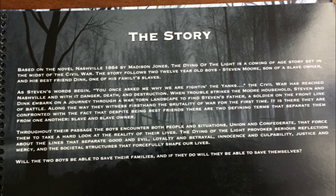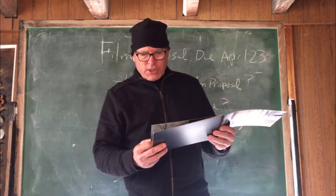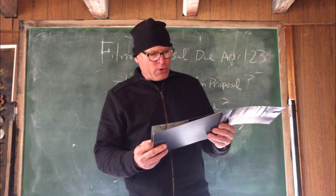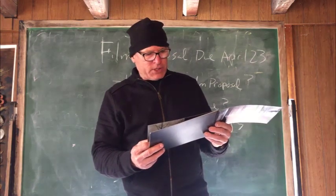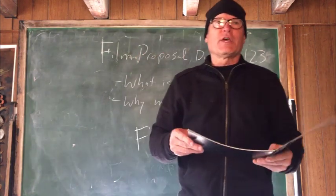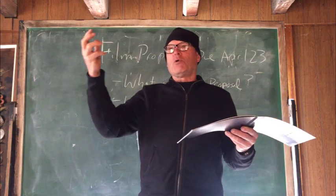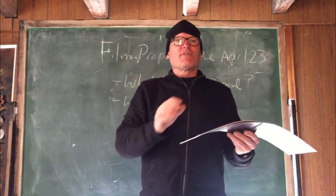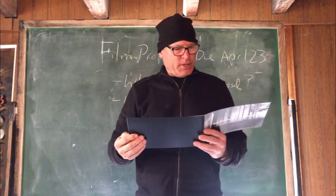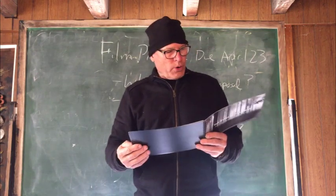Based on the novel Nashville, 1864 by Madison Jones, The Dying of the Light is a coming-of-age story set in the midst of the Civil War. The story follows two 12-year-old boys — Stephen Moore, son of a slave owner, and his best friend Dink, one of his family's slaves. The boys go on a journey to find the father through the hell and ravages of the Civil War, and get the father to return home to save the mother who's been kidnapped.